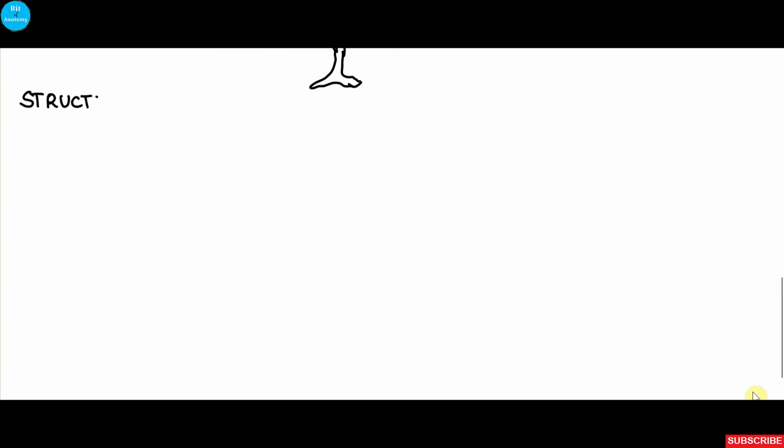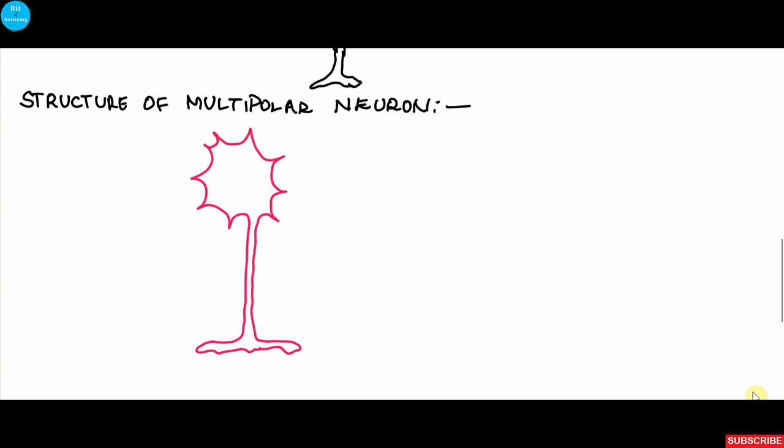The structure of the multipolar neuron contains a cell body and processes. Multiple dendrites will be present with a single axon, and the dendrites will have numerous small short branches. Inside the cell body is a nucleus situated in the center except in sympathetic ganglion neurons and damaged neurons where it becomes eccentric.